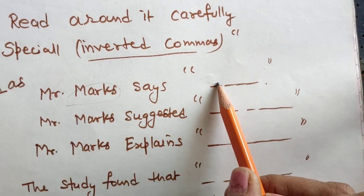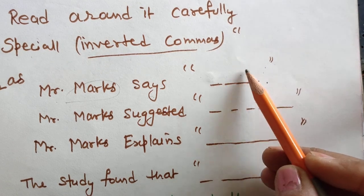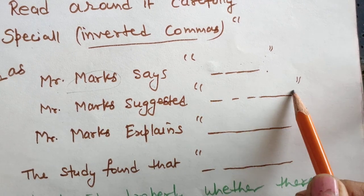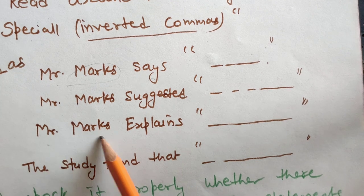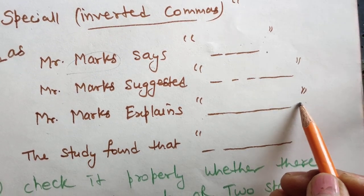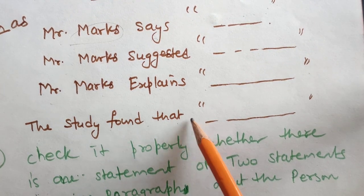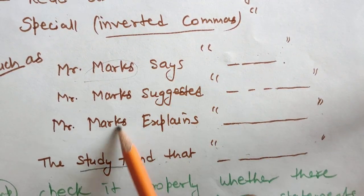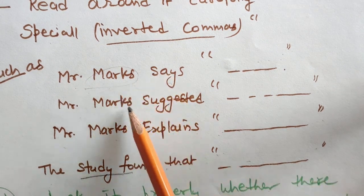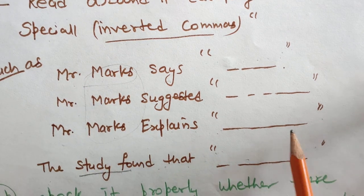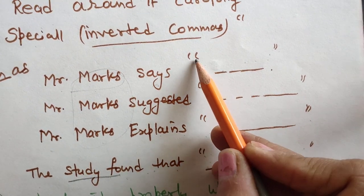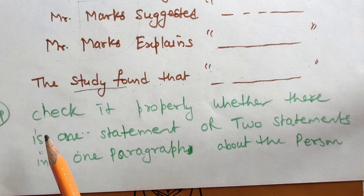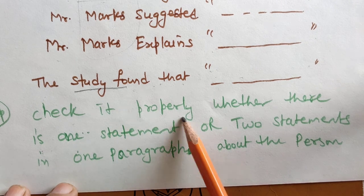Whatever is written in inverted commas for a researcher is important to read because it will lead us towards the answer. So if it is written 'Mr. Mark suggested' or 'Mr. Mark explains' or 'the study found that' — all these words in inverted commas suggest that the saying is from this researcher. We have to read it carefully whenever it is given in inverted commas by the researcher's name.